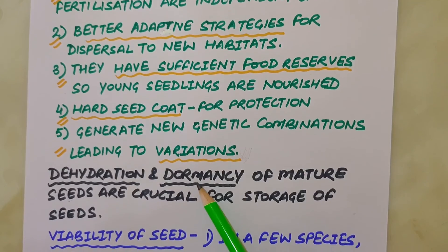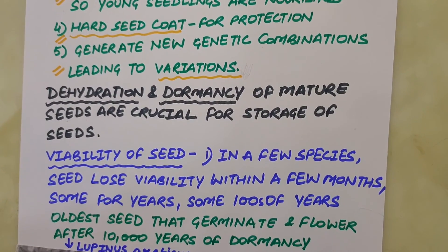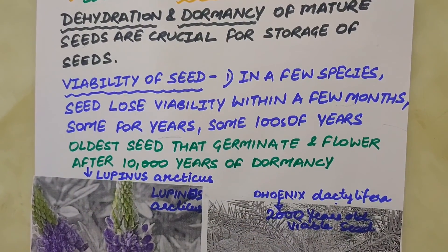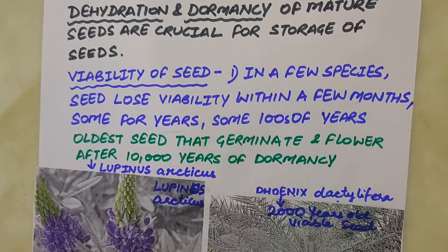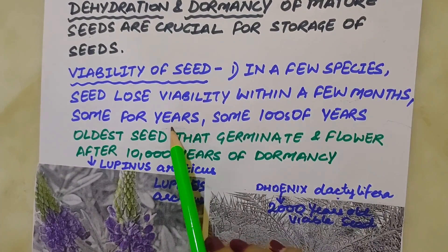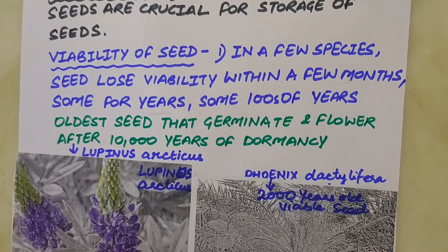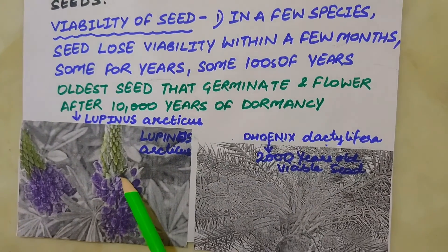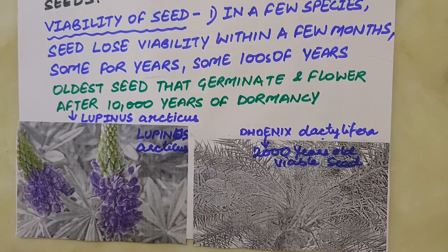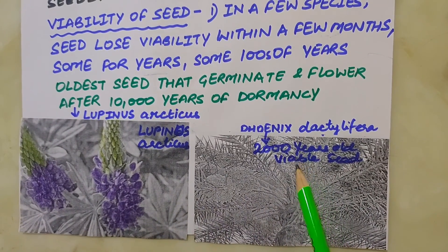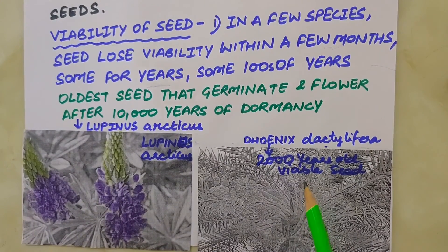Dehydration and dormancy of mature seeds are crucial for storage, which can be used as food throughout the year and also to raise crops in the next season. How long do seeds remain alive after dispersal? This varies greatly. In a few species, seeds lose viability within a few months. Seeds of a large number of species live for several years. The oldest record is that of Lupinus arcticus, excavated from arctic tundra — the seed germinated and flowered after an estimated 10,000 years of dormancy. A recent record is of a 2,000-year-old viable seed of date palm Phoenix dactylifera, discovered during archaeological excavation at King Herod's Palace near the Dead Sea.